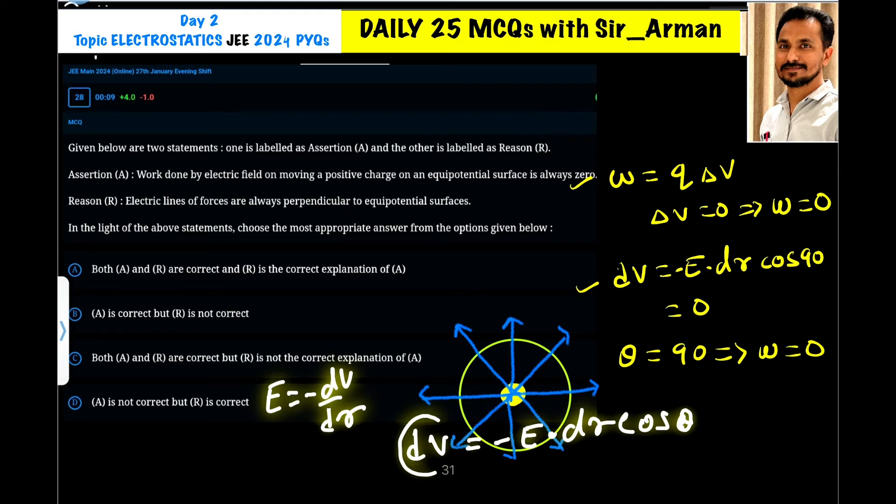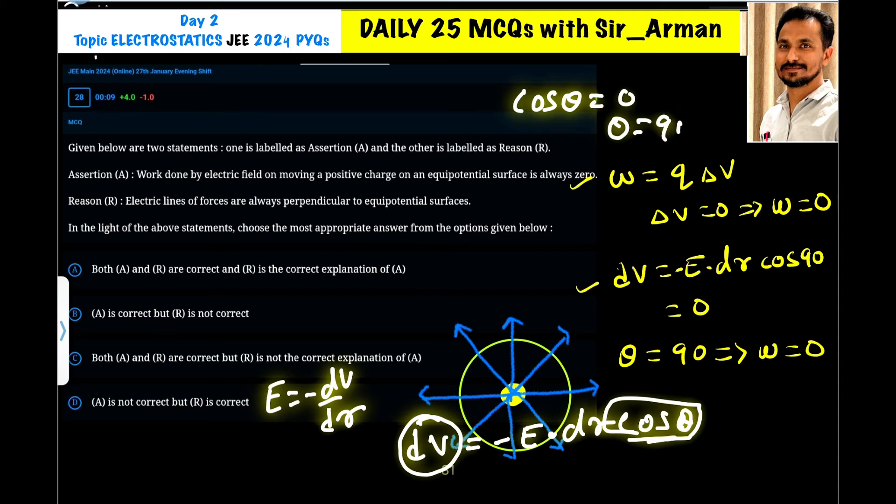We know that for equipotential surface, the delta V or dV is equals to zero. This is only zero if cos theta is equals to zero and for cos theta is equals to zero, theta should be 90.